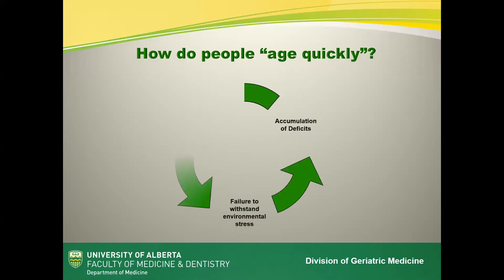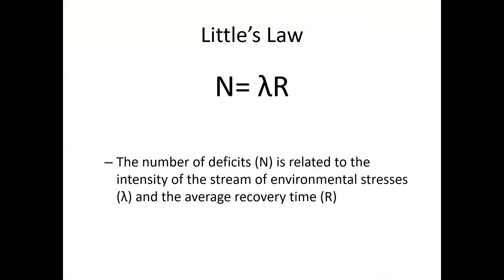People accumulate deficits gradually over time, and as they do, they no longer have assets to respond to new stressors. They have a diminished repertoire of homeostatic responses, which increasingly exposes them to new stressors. They fail to withstand environmental stressors and the accumulation of deficits accelerates. This explains how a person may seem not to age for years, and then all in one year it all seems to change.